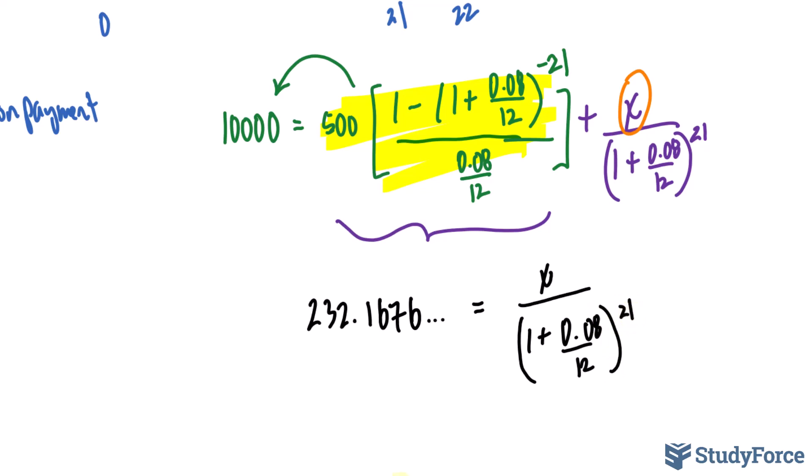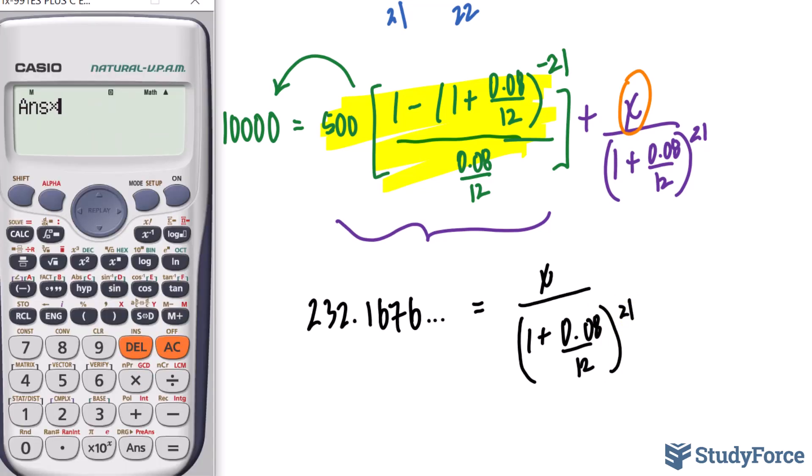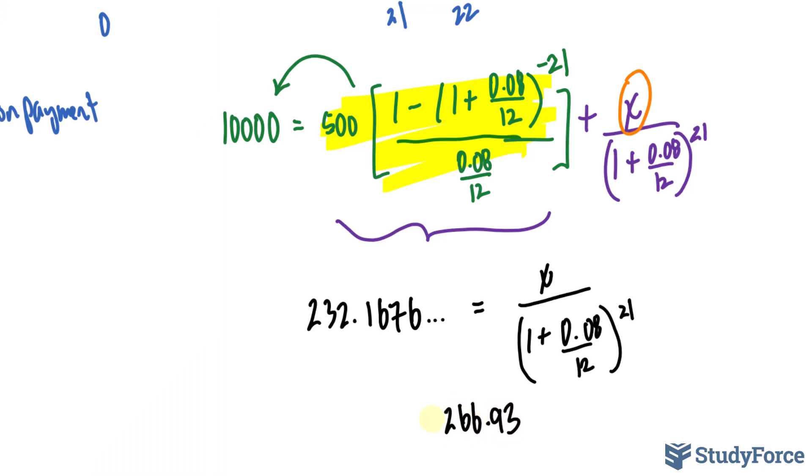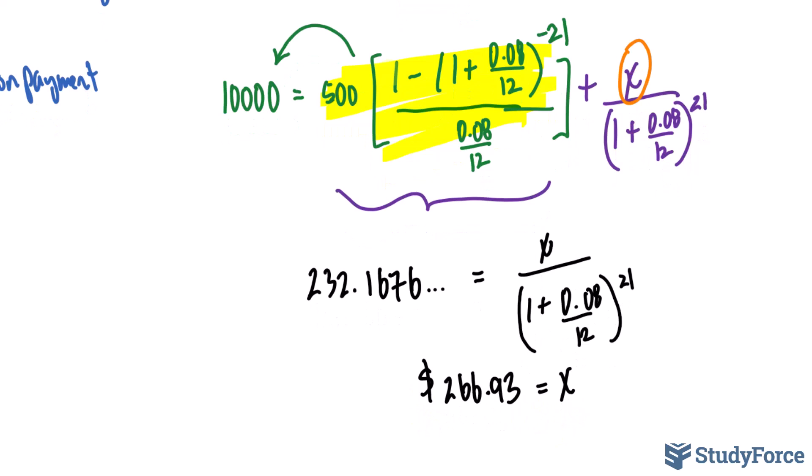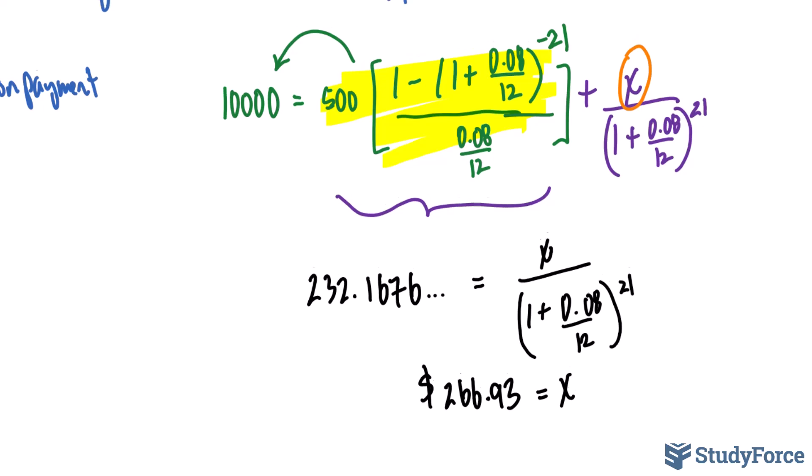To isolate for X, we simply take the value on our screen and multiply it by a factor of 1 plus 0.08 divided by 12 raised to the power of positive 21. What we end up with is 266.93. This value is telling us that our final payment of $500 must be accompanied by an extra $266.93.